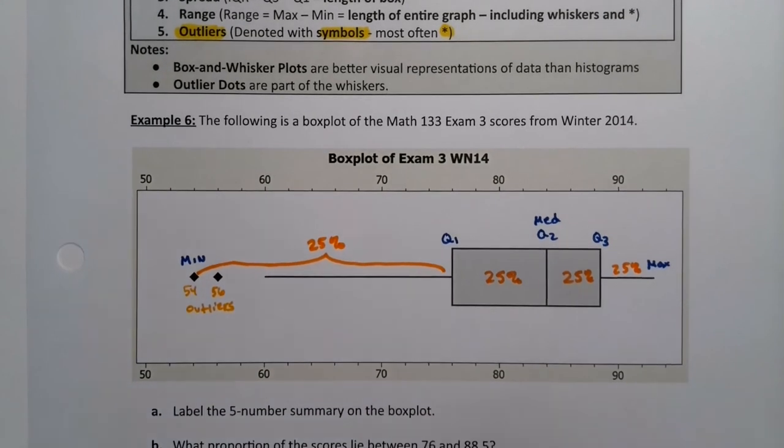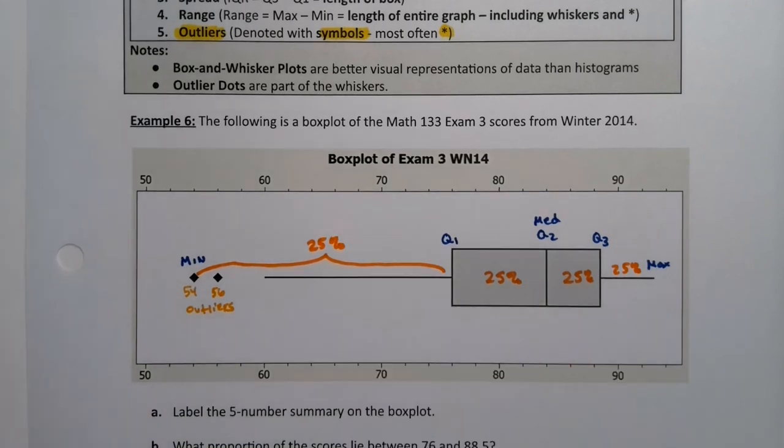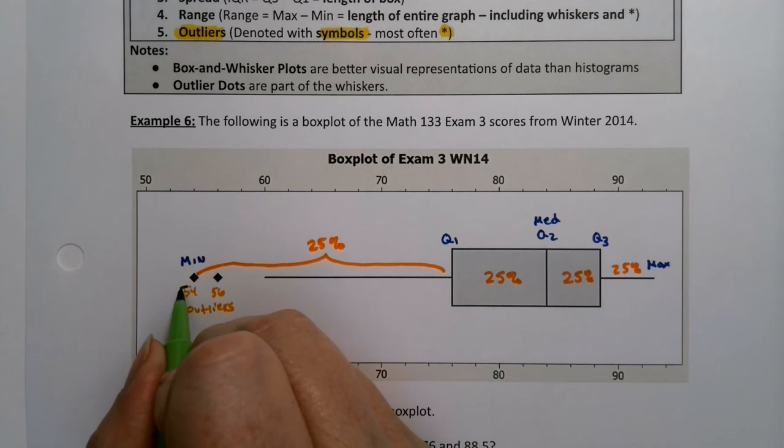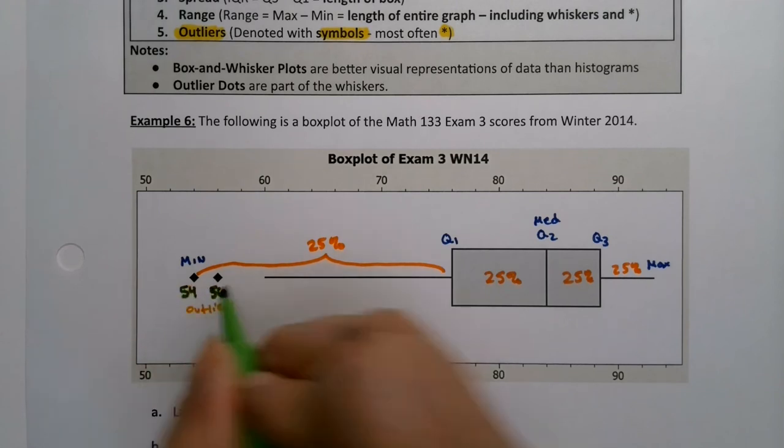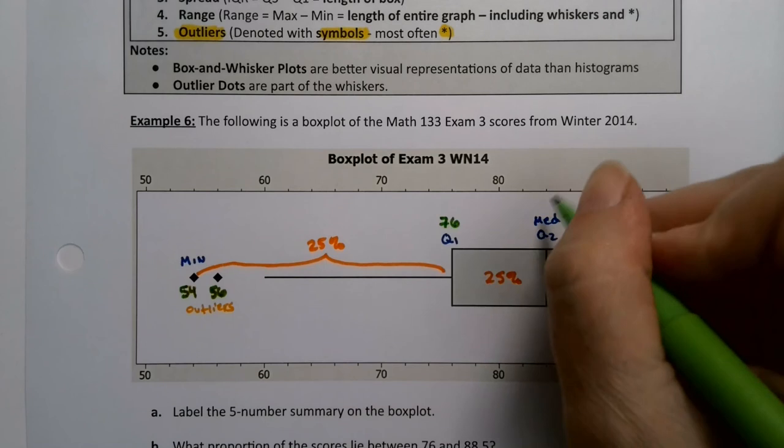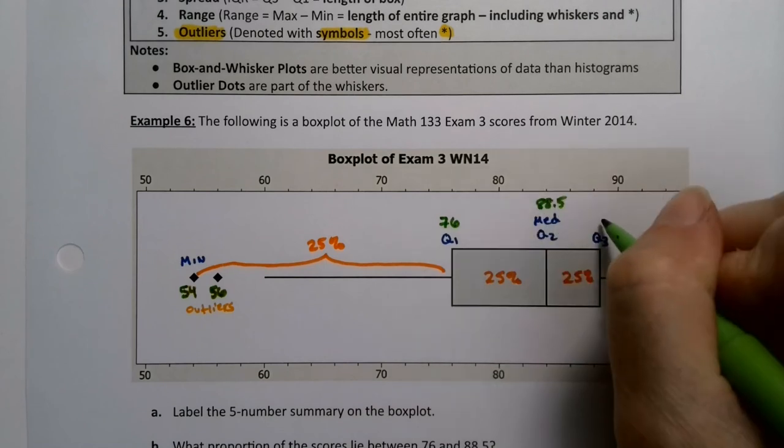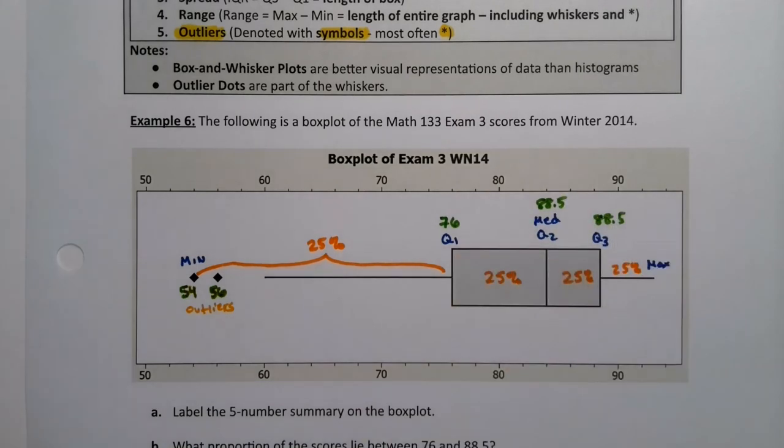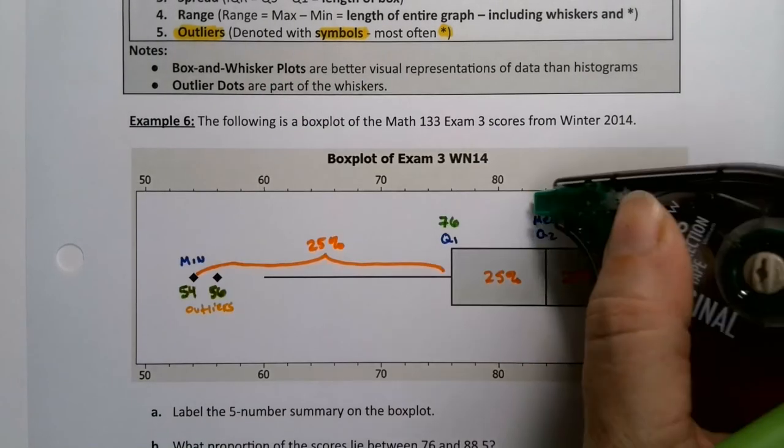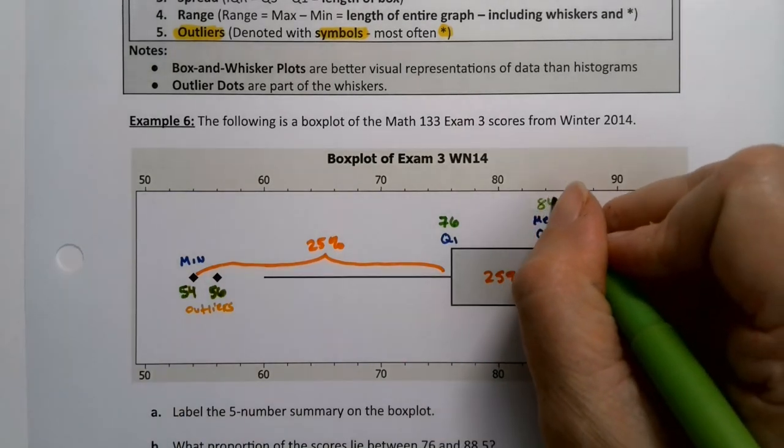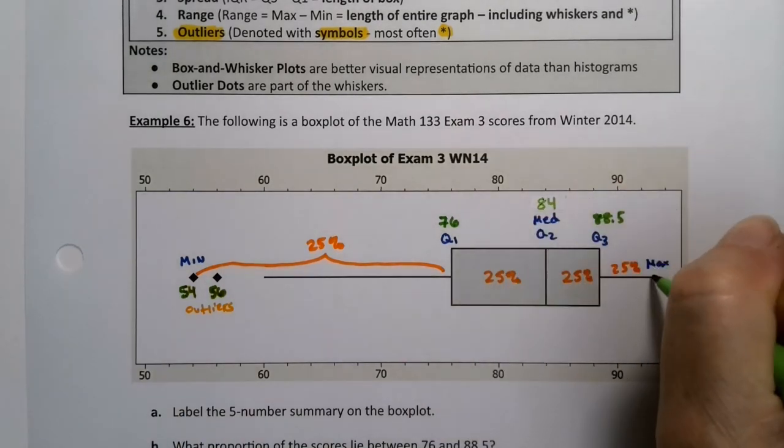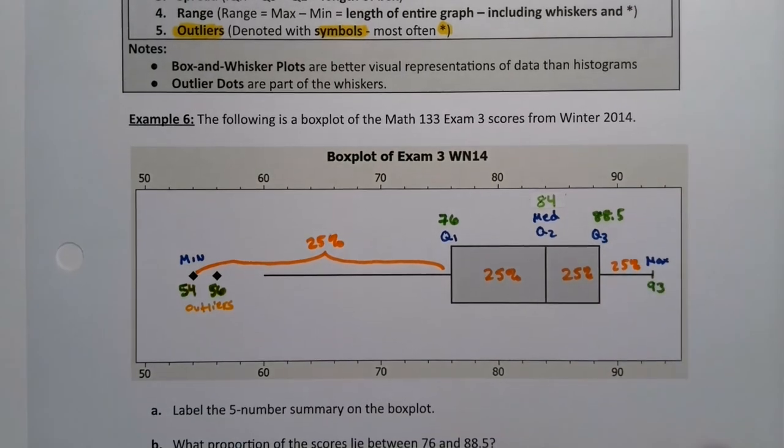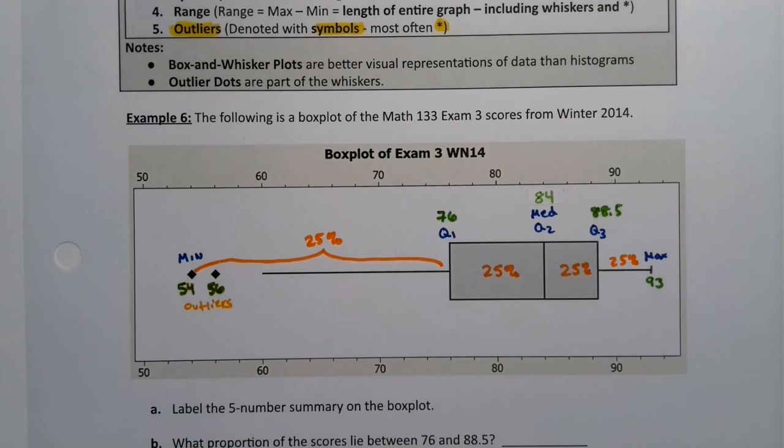Now remember, we've already known these values for this particular problem, so we can say, oh, we already did this: this was 54, this was 56, this was 76, this was 88.5. This was—oh no, sorry—this was 88.5, this was 84. I forgot what my median was for a second. So this is 84, and this was 93. Oops, I ran out of space to write it above, so I'll put it below. Right. So we already know those values because we already know these data; this is the same data set we've been working with.